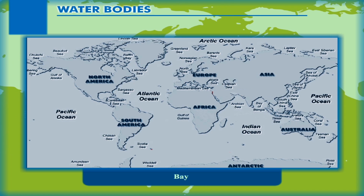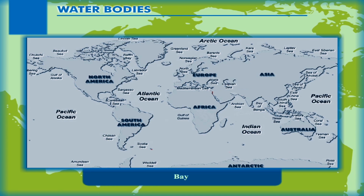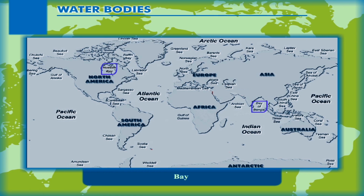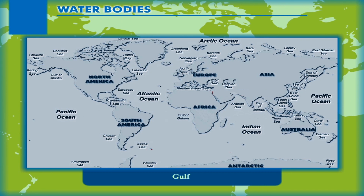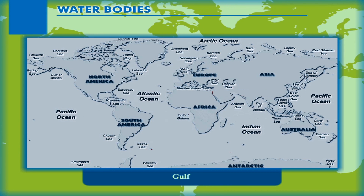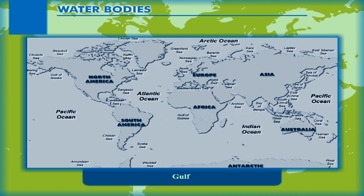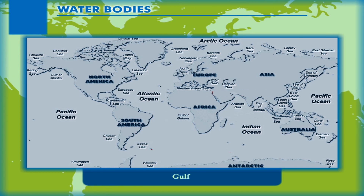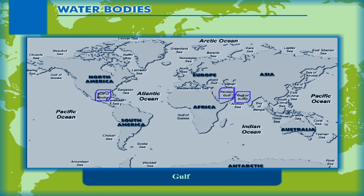Bay: A bay is a part of the sea or a lake having a wide and open curve indenting into the land or shoreline. Some examples of bays are the Bay of Bengal, Hudson Bay, and Bay of Biscay. Gulf: A gulf is a large inlet of the sea, like a bay, reaching into the land. In contrast to a bay, it is usually narrower at the mouth and more enclosed and more deeply indented. For example, the Gulf of Mexico, Gulf of Kutch, and Persian Gulf.